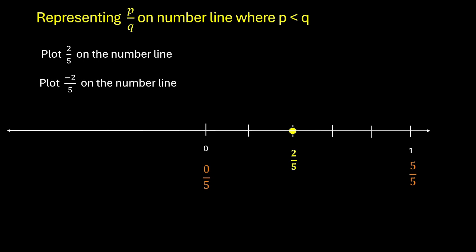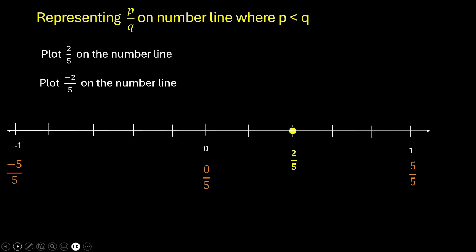Let us plot minus 2 by 5 on the number line. Minus 2 by 5 will lie between 0 and minus 1 — this is negative, so it will go on the left side of the 0. Minus 1 can be written as minus 5 by 5. Now let us make 5 partitions. So this is 0 by 5, minus 1 by 5, and this is minus 2 by 5.